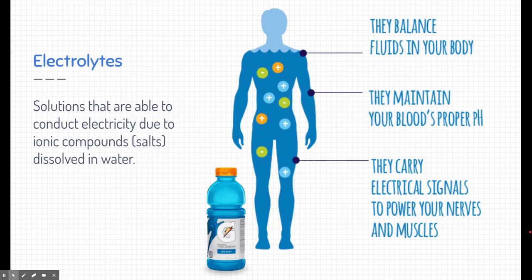Before we move on to covalent compounds I want to talk about an important term and that's electrolyte. You've probably heard of the term electrolyte when we talk about sports drinks. Sports drinks you're probably familiar like Gatorade or Powerade and they talk of how they balance fluids in your body. They maintain blood's proper pH and they carry electrical signals to power your nerves and muscles and all that's true. And that's because electrolytes are solutions that are able to conduct electricity and that's because of those ionic compounds or those salts. When they dissolve in water they break apart into their charged positive and negative pieces.